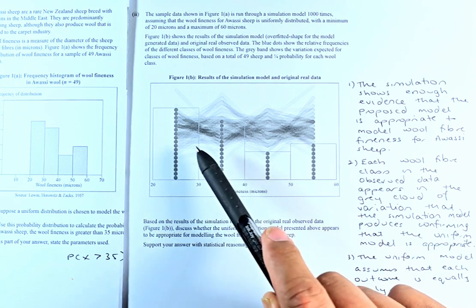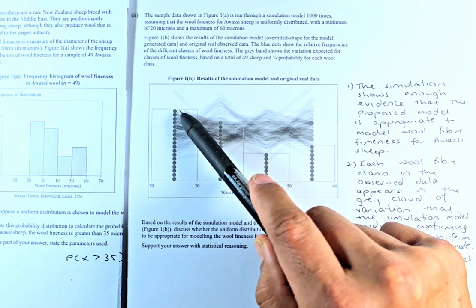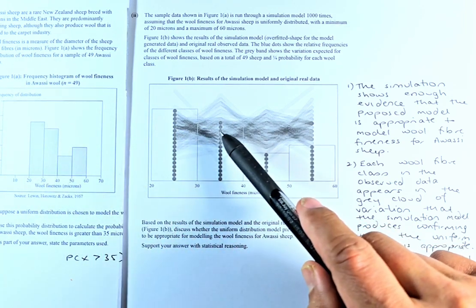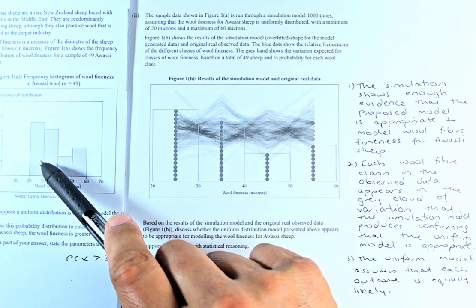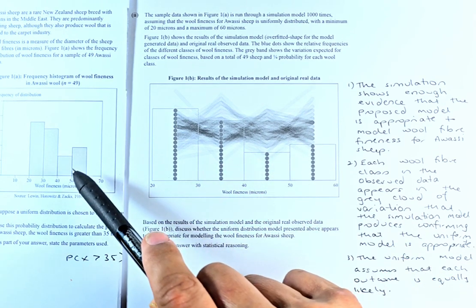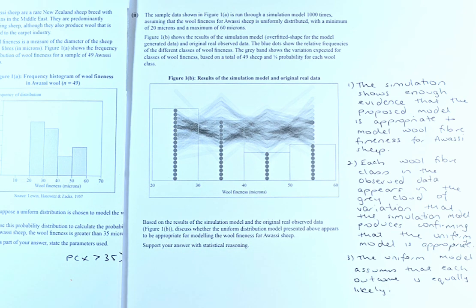So because it can happen here, it could happen here, it could happen there. And the frequency is about the same. So 20 to 30 is as high here, followed lower slightly from 30 to 40, and then slightly lower again from 40 to 50, and they go up slightly from 50 to 60. So the simulation is quite similar to the observed data.